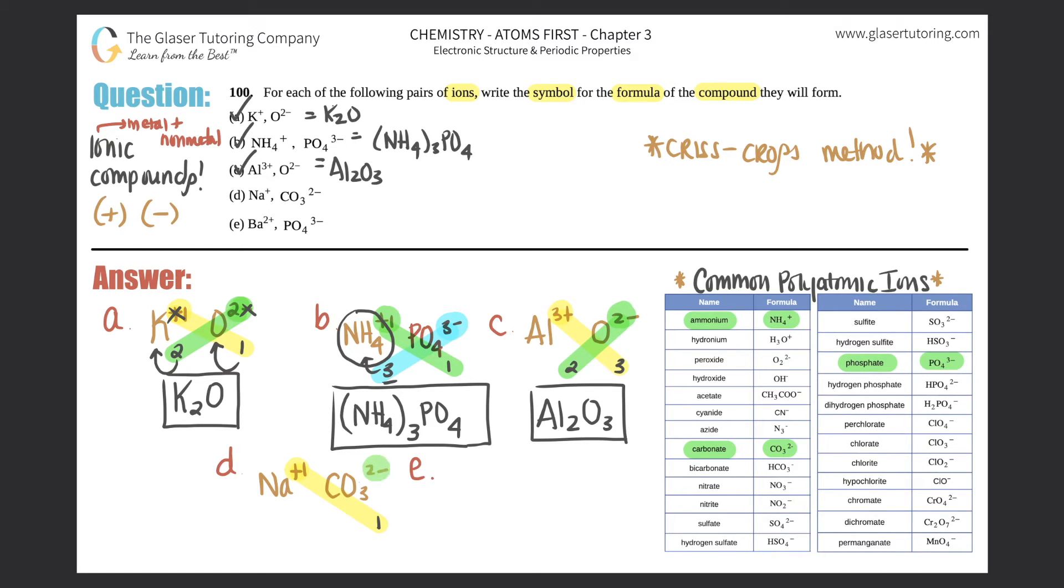We do the crisscross: the +1 comes down to tell me I have one whole carbonate, and the two from the 2- crisscrosses down telling me I have two sodiums. When this compound becomes a compound, it would be Na2 and then just CO3. You could technically put this in parentheses and say one, but it's only one of them so we don't need those parentheses. The answer is Na2CO3.